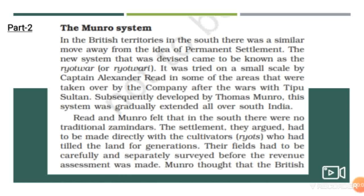In the northern part, the British had already started the Permanent Settlement and afterward the Mahalwari system. Now they were moving towards the southern part, as they were unsatisfied with the Permanent Settlement. In around 1820, a British administrator, Thomas Munro, developed a new system called the Riyotwari system — also known as the Munro system.